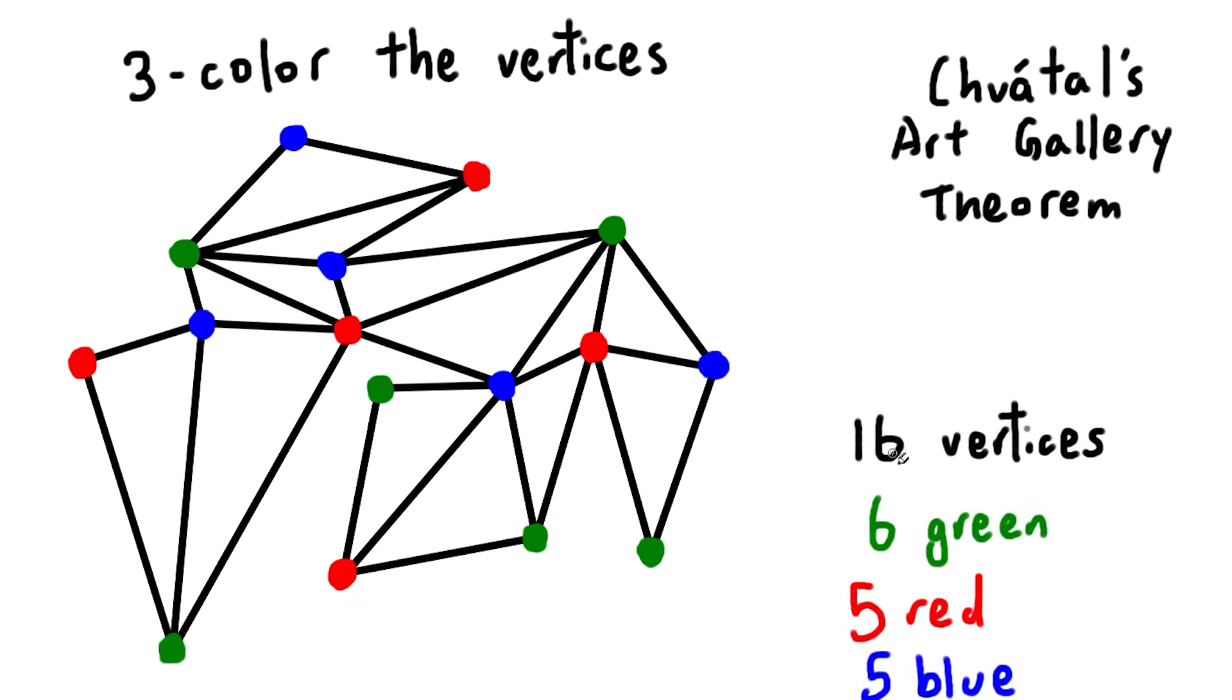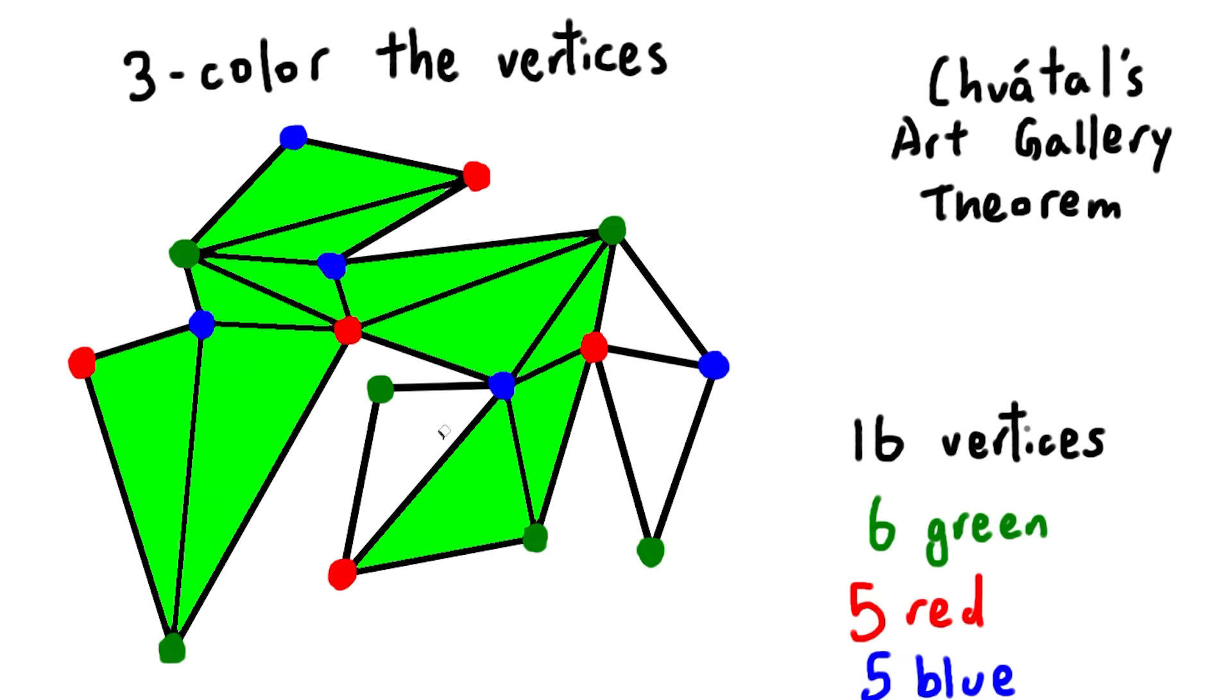All that's left to do now is realize that each triangle has three different colors as its vertices, because two neighboring vertices can't have the same color. So if we put a guard at every blue vertex in the polygon, those guards will be able to see the whole polygon because they can see every triangle. The blue vertices are a part of every triangle.